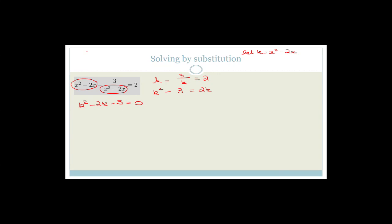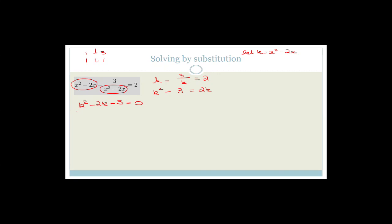That's very doable. The coefficients in front of k squared are 1 and 1. The factors of 3 are 3 and 1. This minus tells me that the signs have to be different - minus 3 and plus 2. So it's going to be k minus 3 times k plus 1 equals 0. Therefore, k is equal to 3 or k equals 1.